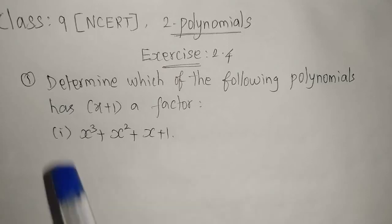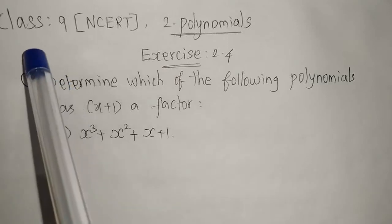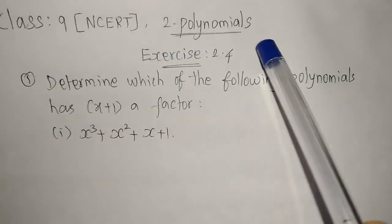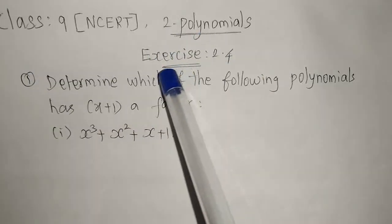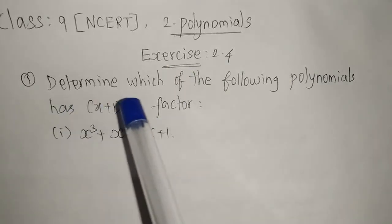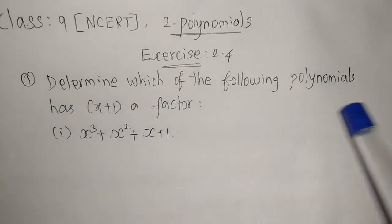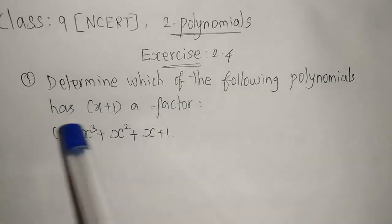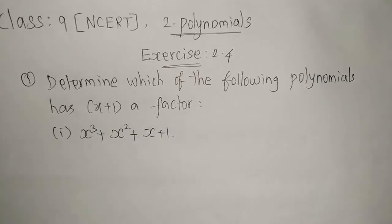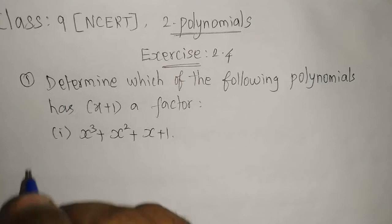Welcome to the channel. Today we're going to see Class 9 NCERT Chapter 2 - Polynomials, Exercise 2.4, Question 1: determine which of the following has (x+1) as a factor. There are four sub-divisions and we'll see each one by one.